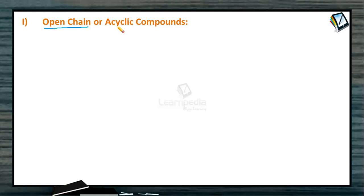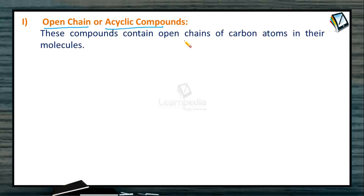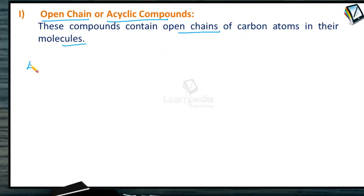The first type is open chain compounds, also called acyclic compounds. These compounds contain open chains of carbon atoms in their molecules, meaning the terminal carbon atoms are completely free and not linked with each other. The chain is open, so we call them open chain or acyclic compounds — they are not in the form of a closed ring.